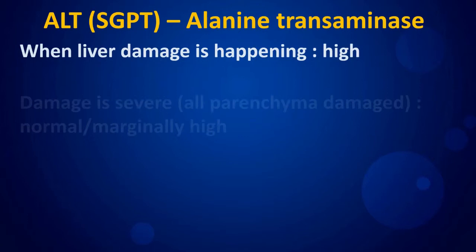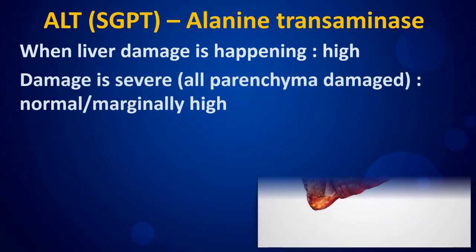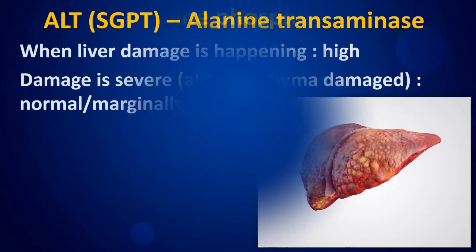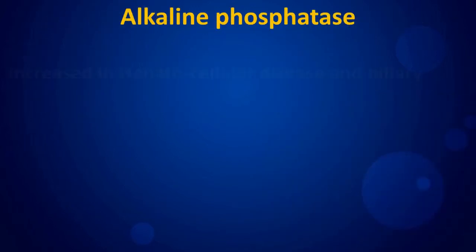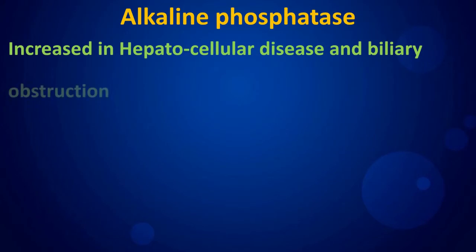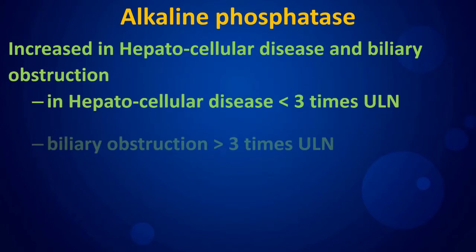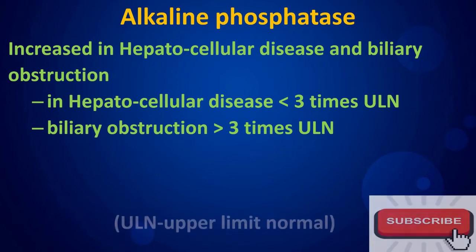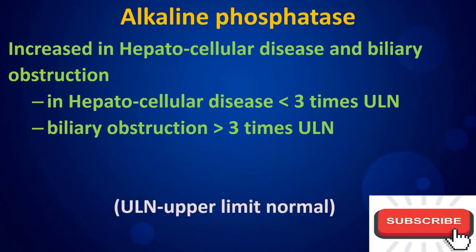When liver damage is severe and all parenchyma is damaged, enzyme levels may be normal or only marginally elevated. Alkaline phosphatase is increased in both hepatocellular disease and biliary obstruction. In hepatocellular disease it rises less than three times the upper limit of normal, while in biliary obstruction it rises more than three times the upper limit of normal.